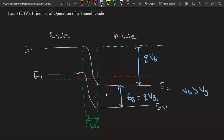Now we can draw the density of filled states on the n-side and the density of empty states on the p-side.